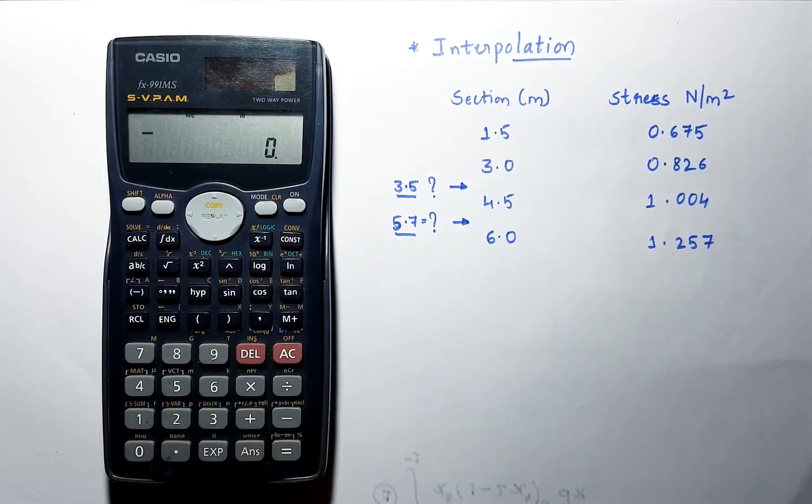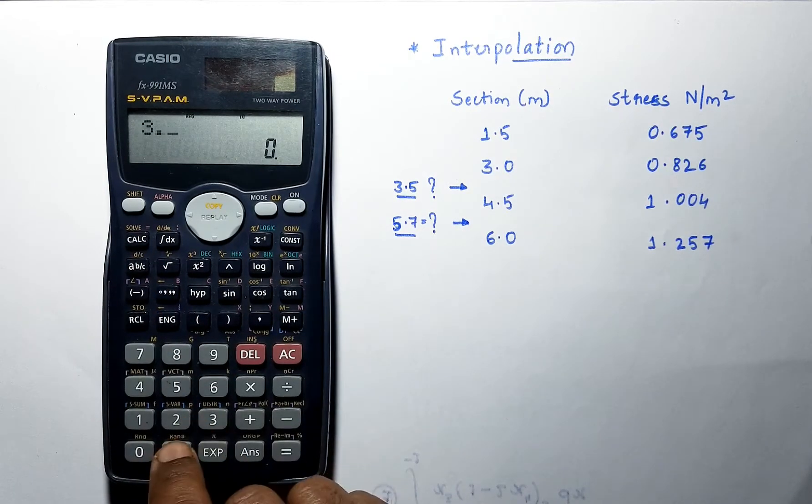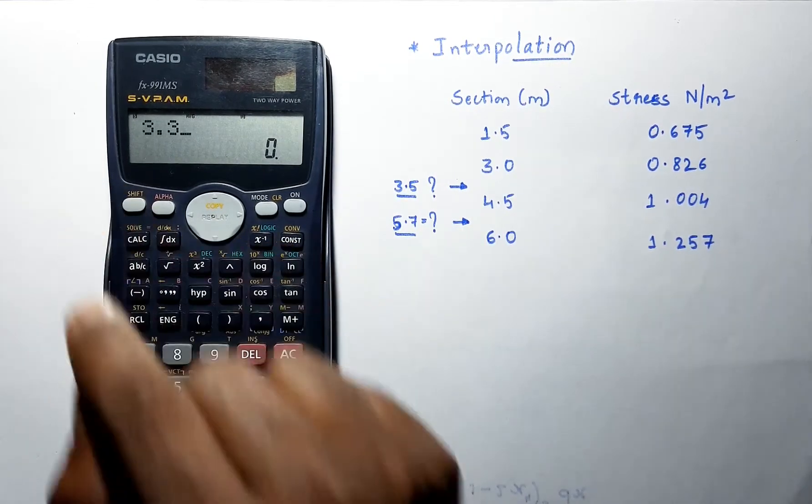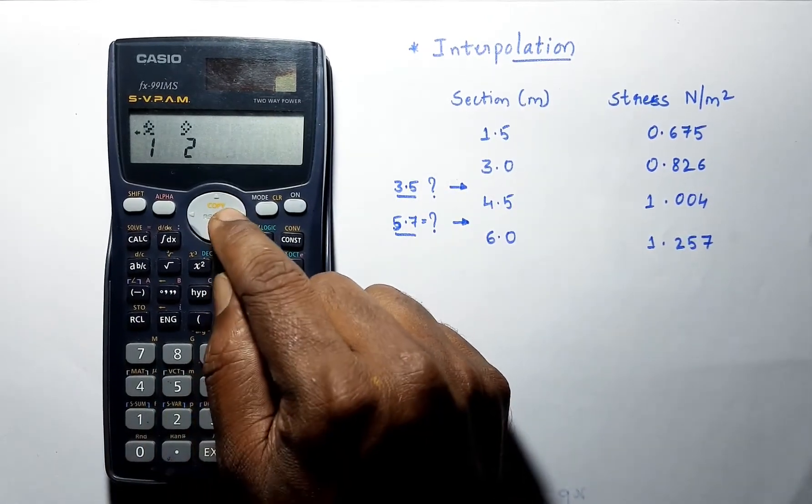Now say we have to find out for 3.3. Again, select shift 2 and select that symbol.